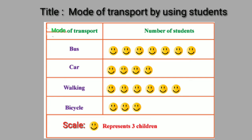From this pictograph, tell me students: how many children used the bus for travelling? Each picture means three children. Count the pictures in that column — there are seven. So, seven multiplied by three equals twenty-one children came by bus.